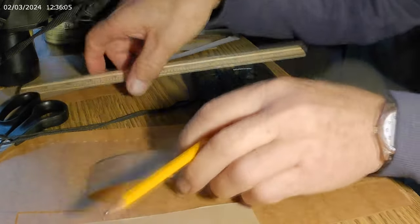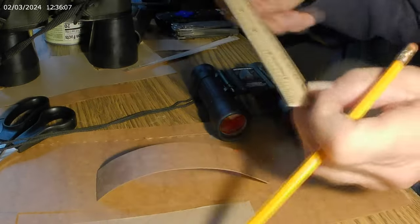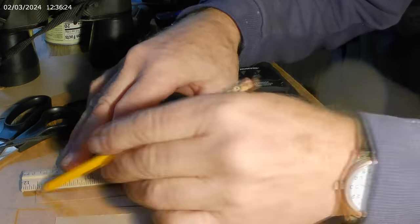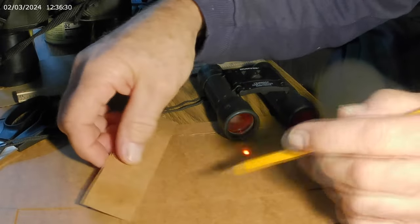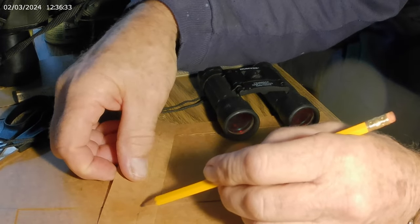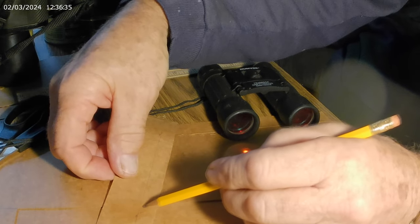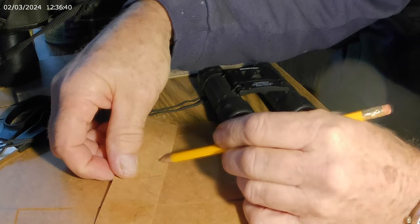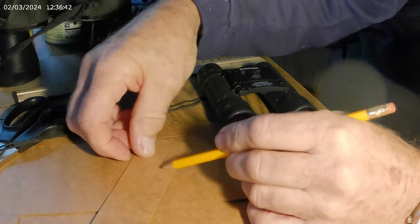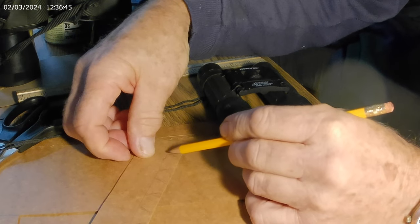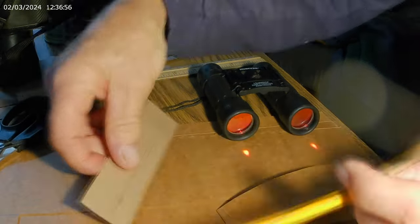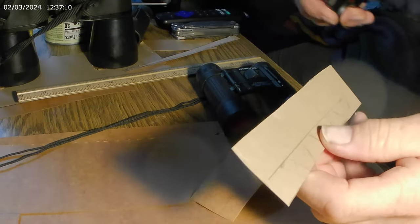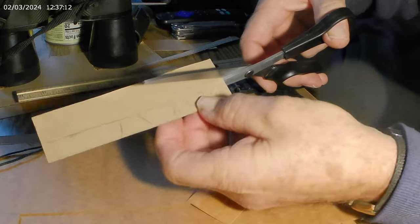So draw a reference line. And do this on both. You'll need one for each side. And then you'll want to make three tabs, and you can just mark those off. And then cut out the cardboard that's in between the tabs.